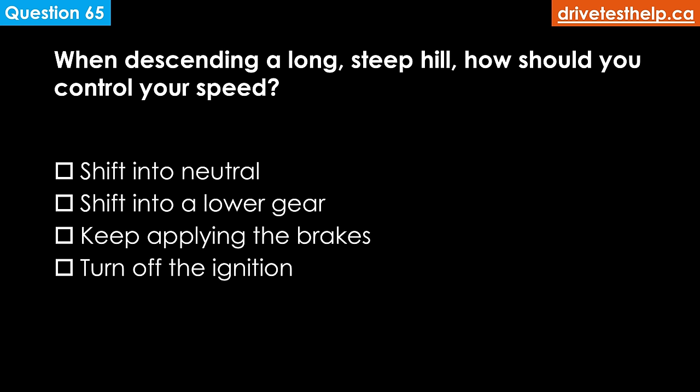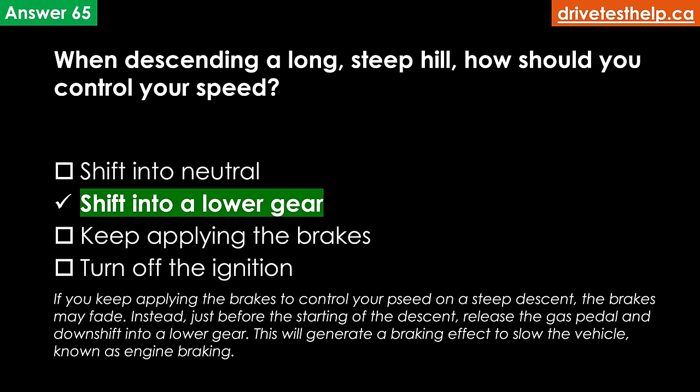When descending a steep hill, how should you control your speed? Options: shift into neutral; shift into a lower gear; keep applying the brakes; turn off the ignition. The correct answer is shift into a lower gear. If you keep applying the brakes on a steep descent, the brakes may fade and become less effective. Instead, just before starting the descent, release the gas pedal and downshift into a lower gear — even with an automatic transmission. This generates engine braking to slow the vehicle. The lower the gear, the greater the engine braking effect. Apply the brakes only when engine braking is insufficient or you want to stop.